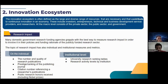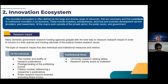At the macro level it consists of the private sector, the public sector, and the government. There are several factors to achieve an innovation ecosystem. First is research impact. Many domestic government research funding agencies grapple with the best way to measure research impact in order to involve it in their policies and funding rationale of the publicly funded research sector. The topic of research impact also has individual and institutional measures and metrics.